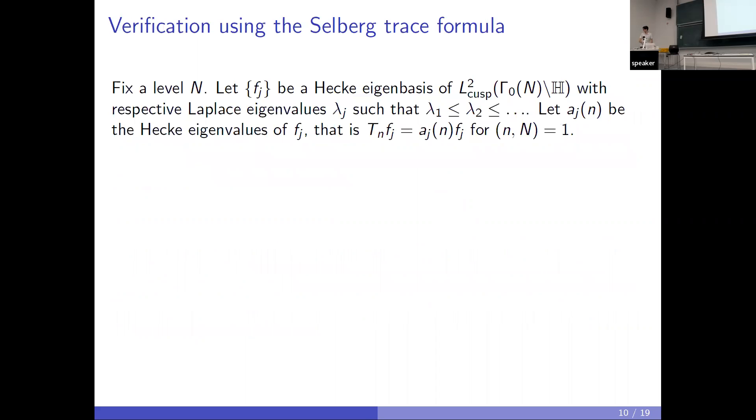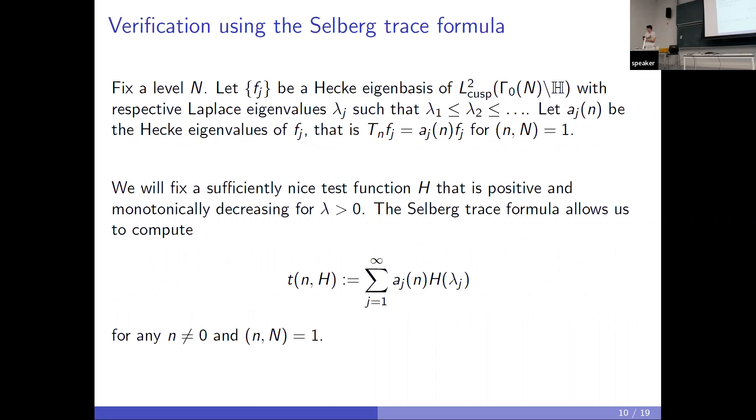So I'll make this more specific. If we fix the level M and let f_j be this Hecke eigenbasis again, and we have these Laplacian eigenvalues lambda_j, and we order them. We let these a_n_j be the Hecke eigenvalues of each of these functions. We fix some nice test function h that is positive and monotonically decreasing. The trace formula allows us to compute this quantity. We can't compute the quantity exactly, we compute it through the geometric side. But essentially we can get a numerical answer that's completely rigorous for each of these values for any M.